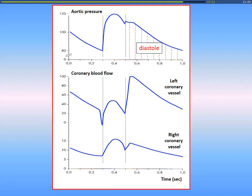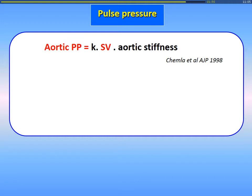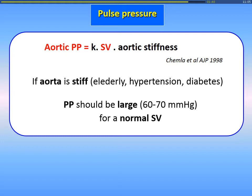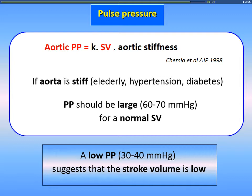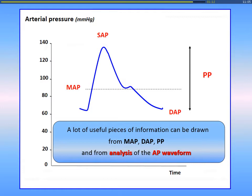Pulse pressure, briefly, at the level of the aorta: aortic pulse pressure is proportional to stroke volume and also to aortic stiffness. In old, hypertensive, or diabetic patients with a stiff aorta, you should have a larger pulse pressure for the same stroke volume. Therefore, if you observe a low pulse pressure — for example, 30–40 — in this situation, you know the patient has a low stroke volume. All these four values are very important and helpful to assess hemodynamic status.